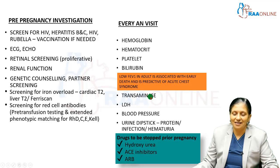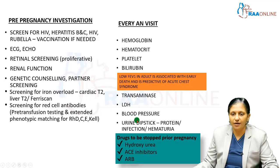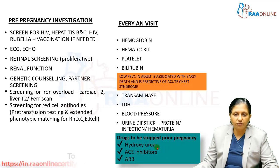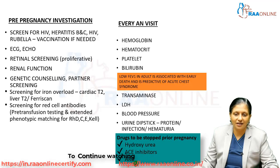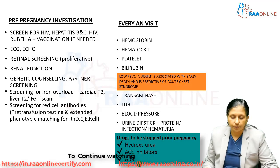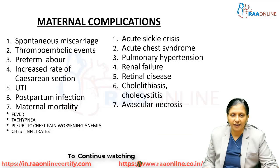Transaminase and LDH levels — markers of hemolysis — should be measured. Blood pressure monitoring and urine dipstick testing for protein, infection, and hematuria are required. If the patient is on hydroxyurea, it should be stopped, and ACE inhibitors or ARBs should also be discontinued before becoming pregnant.